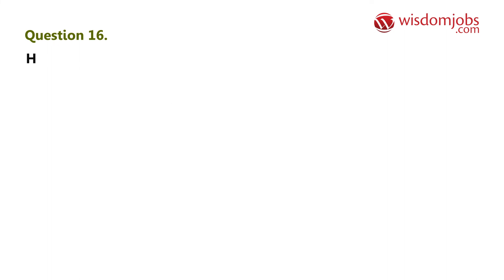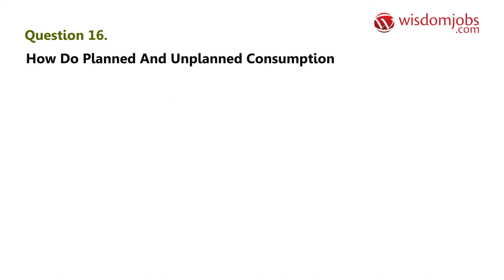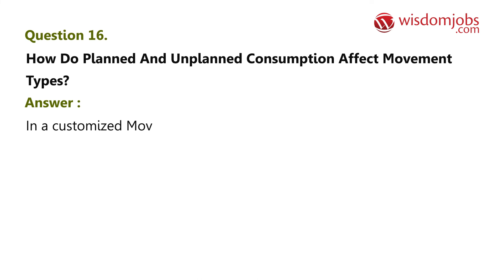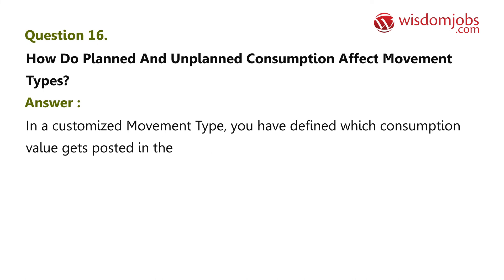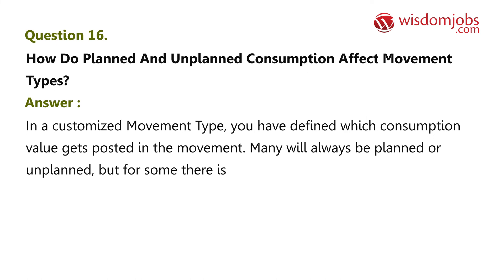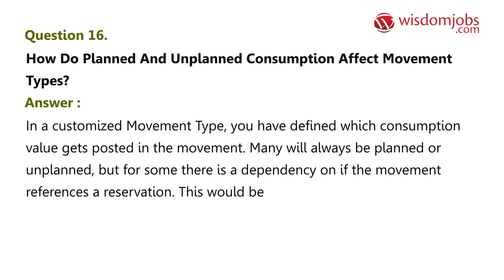Question 16: How do planned and unplanned consumption affect movement types? Answer: In a customized movement type, you have defined which consumption value gets posted in the movement. Many will always be planned or unplanned, but for some there is a dependency on whether the movement references a reservation. If it does reference a reservation, this would be planned consumption.